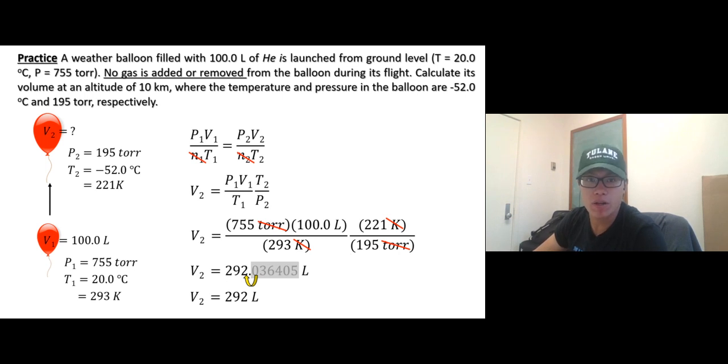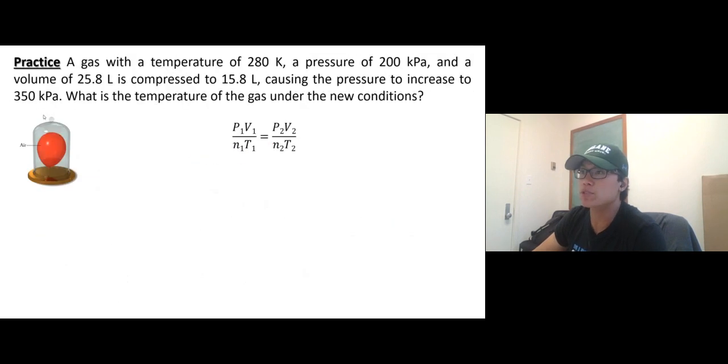That shouldn't be that difficult—it's just simple math. One more time. A gas with a temperature of 280 Kelvin, a pressure of 200 kilopascals, and a volume of 25.8 liters.